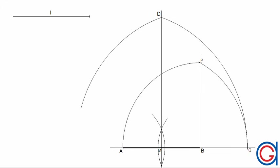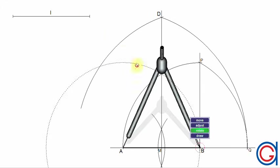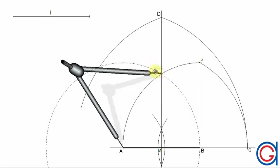Now, we must locate the other vertices of the pentagon. To do this, we must scribe two arcs of length AB, which will intersect our previously drawn arcs.